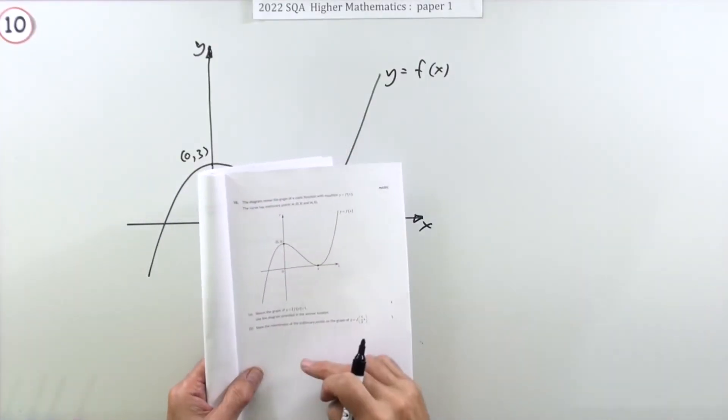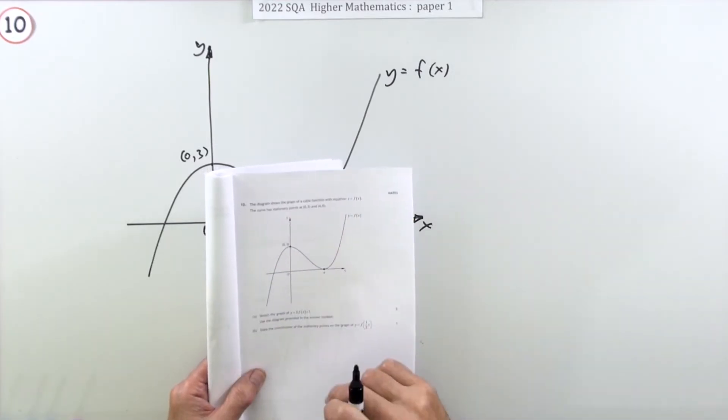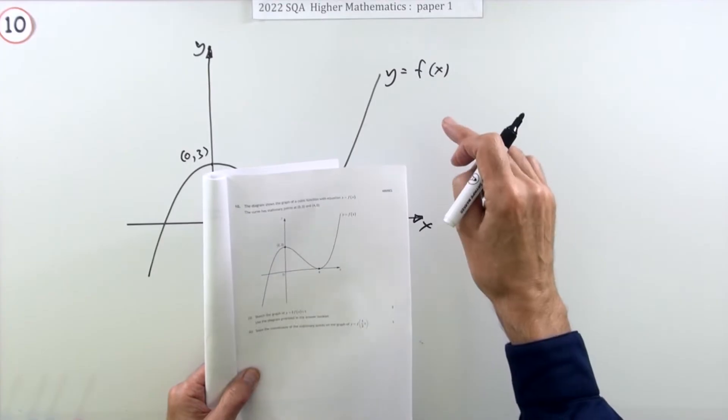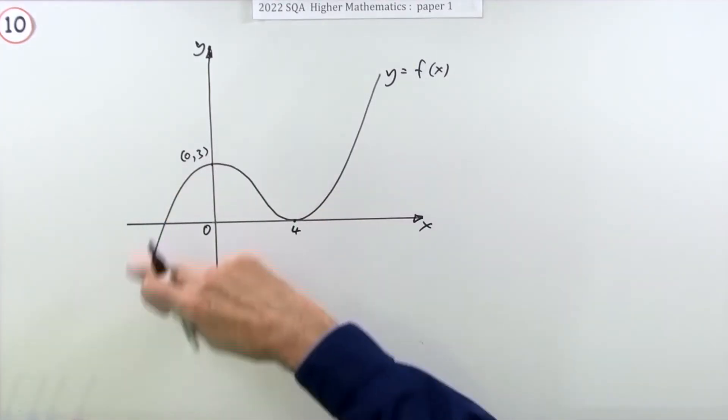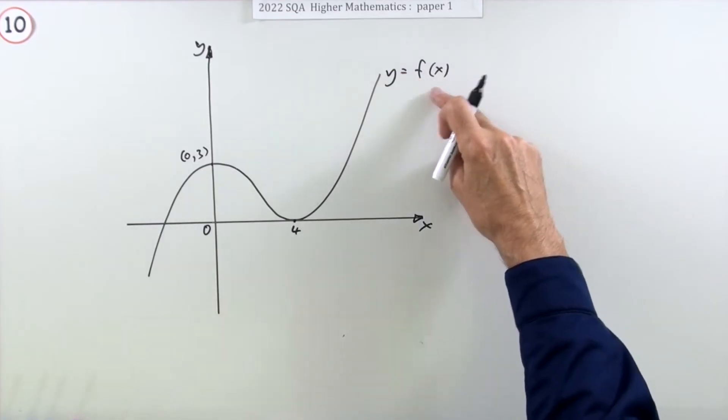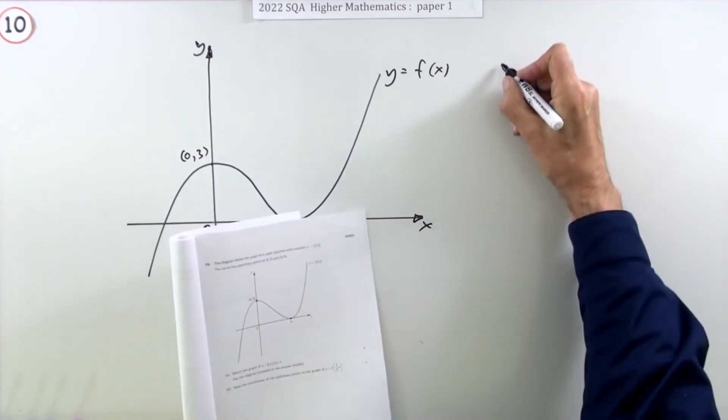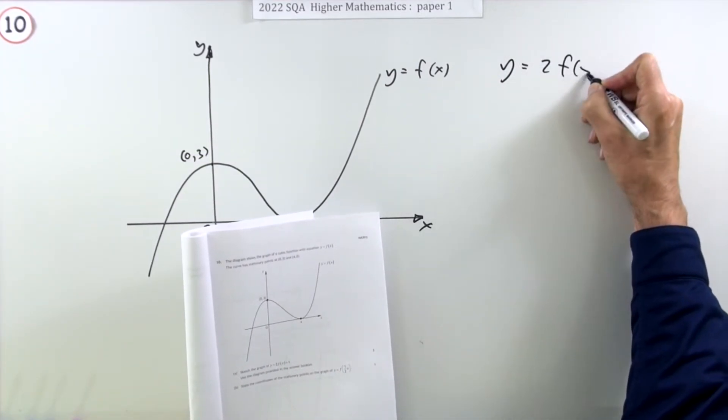Number 10 from the 2022 higher math paper one. It's a transformed graph question, sketching the graph resulting from a transformation of a function. Here you've got the graph of this cubic function f of x with its two turning points. You have to sketch the graph of y equals two f of x plus one.